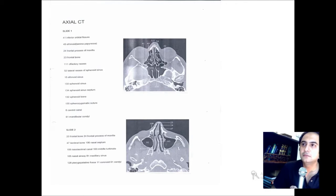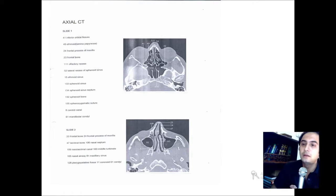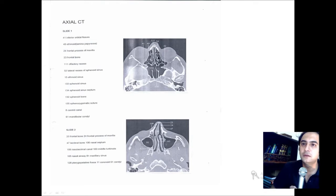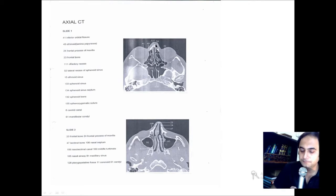Axial section — this is the basic CT. Everything in the CT scan can be identified on an axial CT. The coronal CT and the sagittal CT are just supportive. Now, starting with the axial slices, here you see these small hypodense areas — these are the ethmoidal sinuses, and they are frequently large in number. In the midline, you can see the nasal septum. Number 23 is the frontal bone, the part of the frontal bone that is visible.